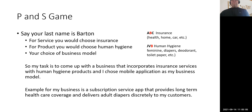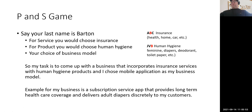Here's an example: if your last name is Barton, your service is insurance and your product is human hygiene, both assigned by the letter B. Then you choose a business model — in this case, a mobile application. The result: a subscription app that provides long-term healthcare coverage and delivers adult diapers discreetly to customers. That's the kind of creative combination you're going for.